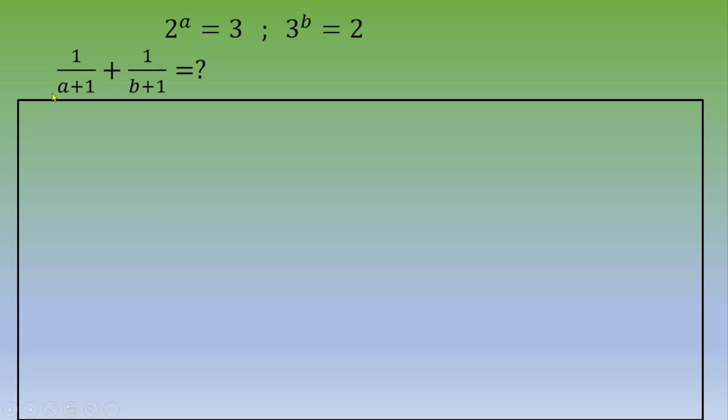We're going to modify this quantity: 1 over a plus 1 plus 1 over b plus 1. The common factor is a plus 1 times b plus 1, and the numerator is b plus 1 plus a plus 1.